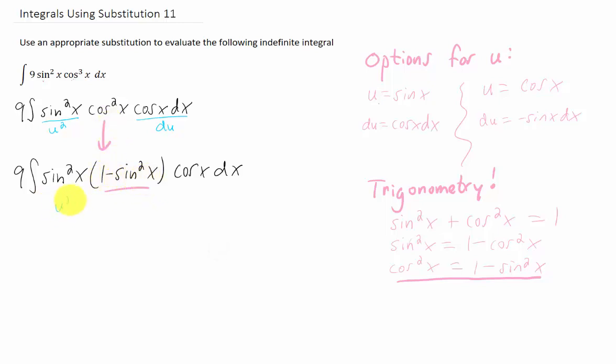what do we have? We have a u squared here, we have a 1 minus u squared here, and then we have a du as cosine of x dx. This looks like something that we could integrate. So let's do it. Let's use that substitution.